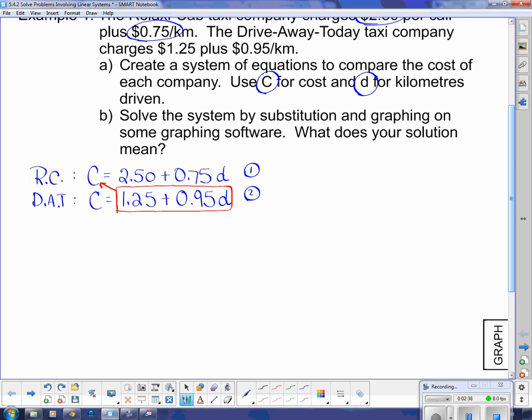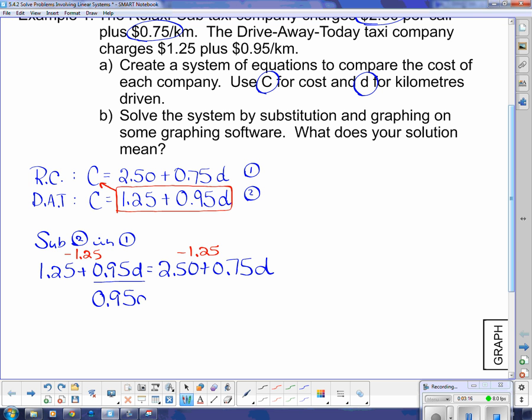So I'm going to say sub two in one. And when I do that, I get 1.25 plus 0.95d equals $2.50 plus 0.75d. And now I have to solve. So I'm going to make this the home of the variable and I'm going to leave that there, which means I have to subtract $1.25 from both sides. And I end up with leaving the 0.95d here. And this becomes $1.25 when I actually make that subtraction. And then I have 0.75d.